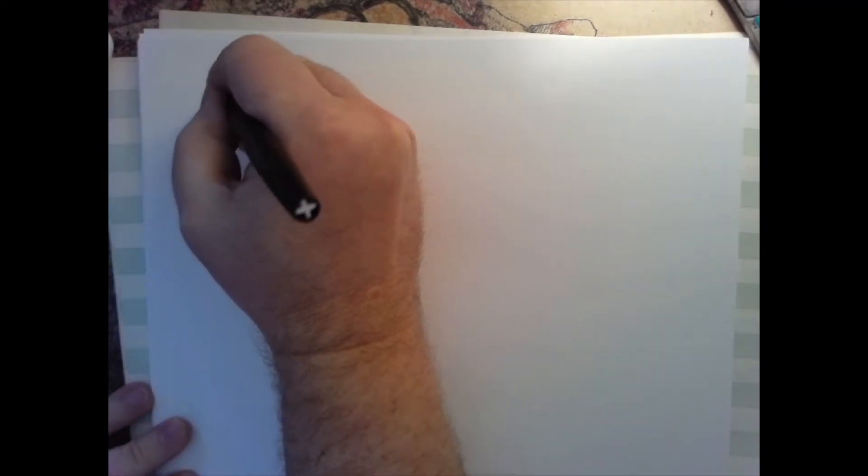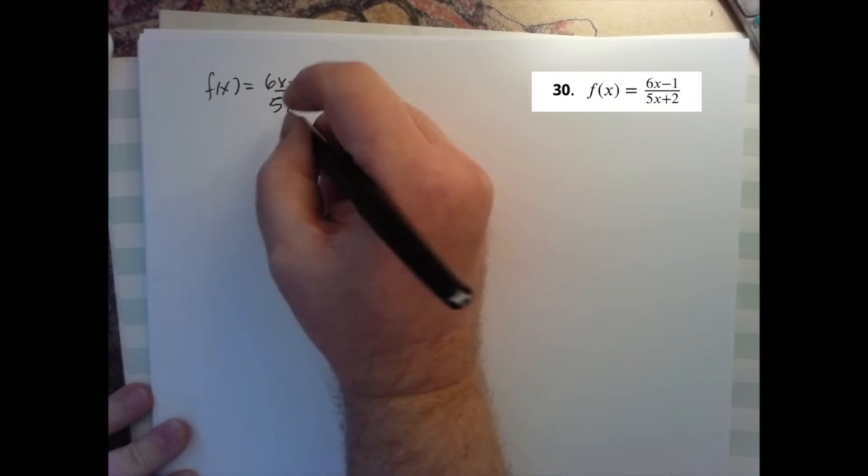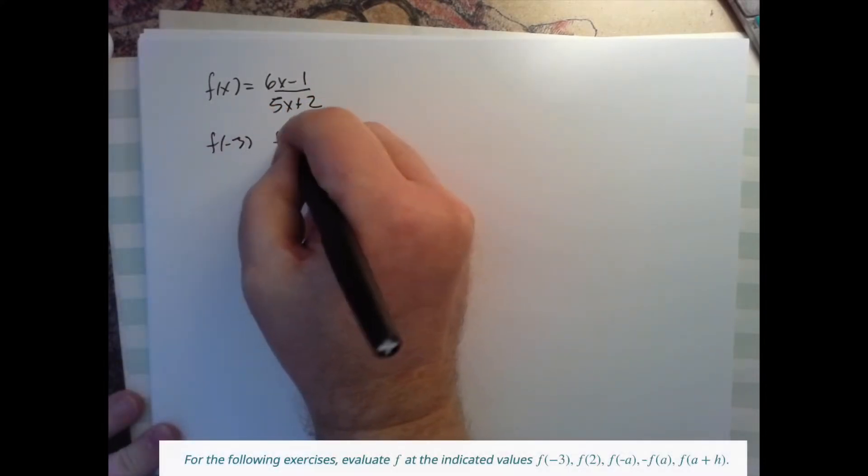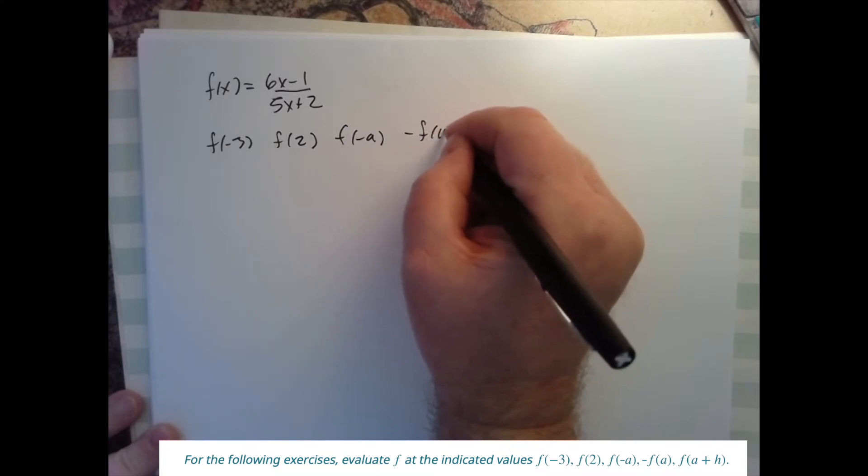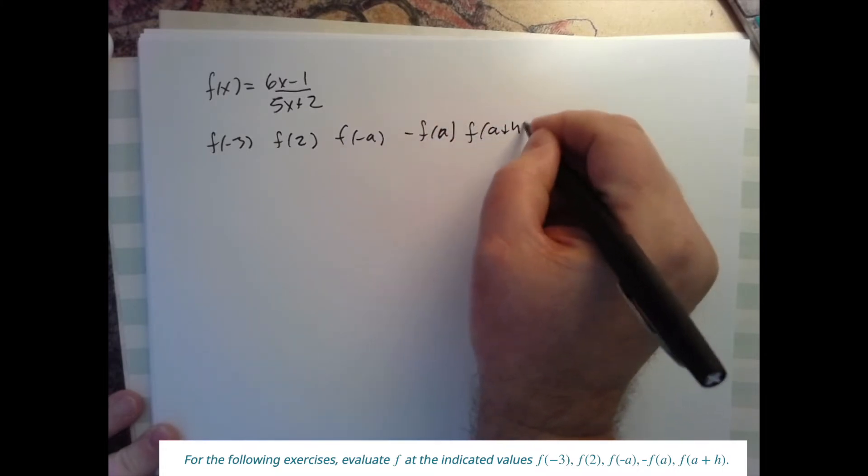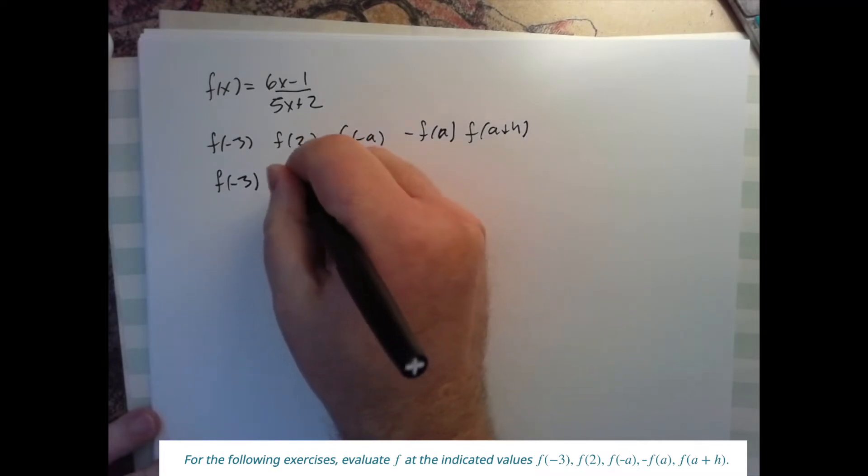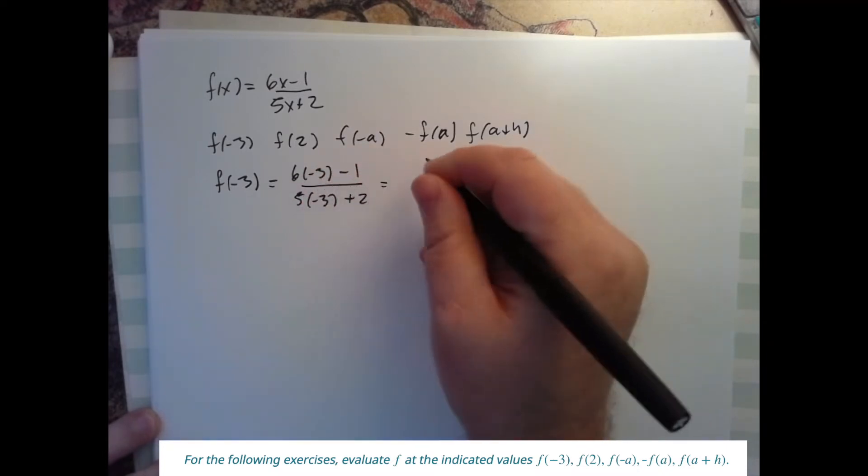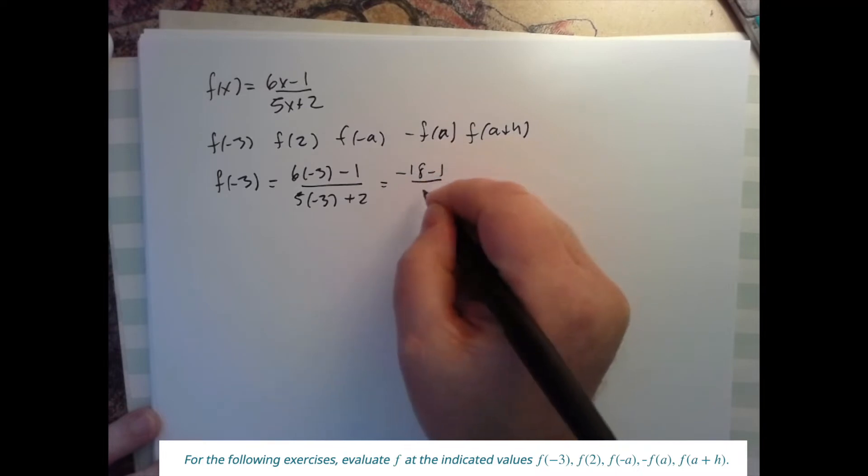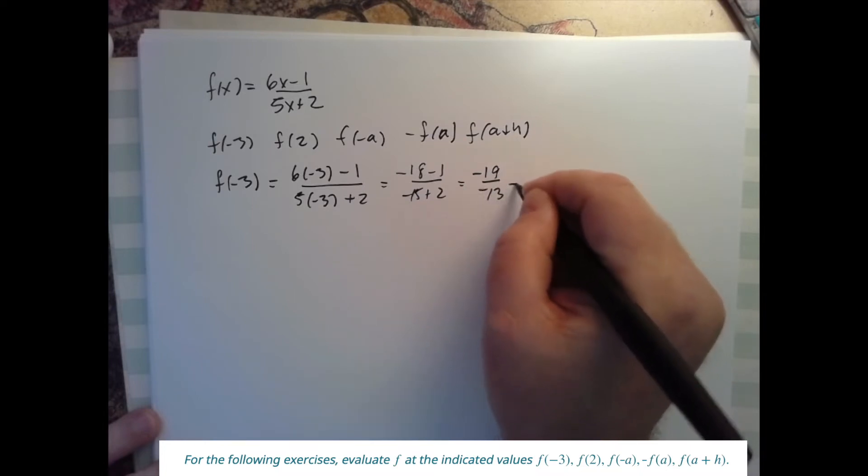Let's evaluate our function that they're giving us. f(x) is equal to 6x minus one over 5x plus two. Now we're supposed to do it at f is equal to negative three. Well, we plug in three into everywhere we have an x. So we have x is minus three minus one, five minus three plus two. So we get negative 18 minus one over negative 15 plus two. Negative 19 over negative 13 gives us negative 19 over negative 13.